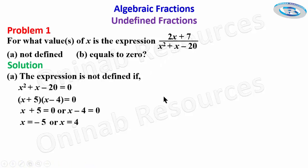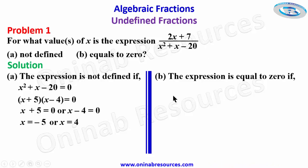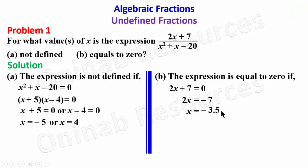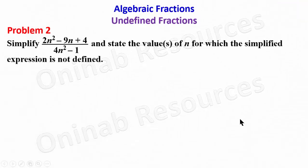For part (b), the expression equals zero if the numerator is equal to zero. We equate the numerator to zero: 2x + 7 = 0. Taking 7 to the other side gives 2x = −7, and dividing both sides by 2 gives x = −3.5. This is the value of x for which the expression equals zero, and that's all for problem one.